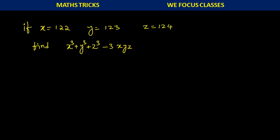There is a problem given like this: if x is equal to 122, y is equal to 123, and z is equal to 124, then find the value of x cube plus y cube plus z cube minus 3xyz. So how to do this problem?